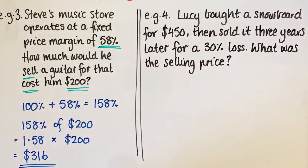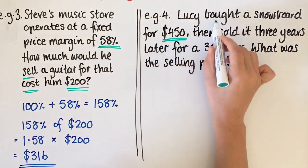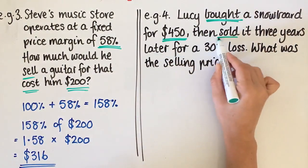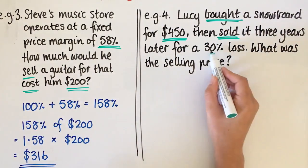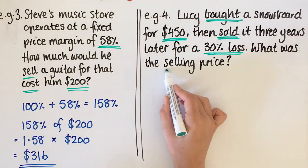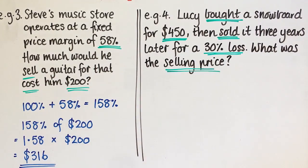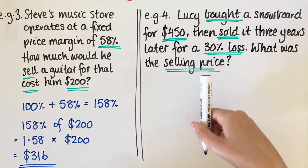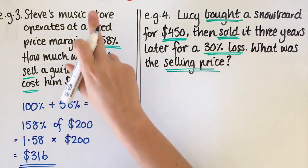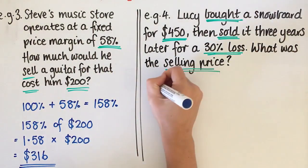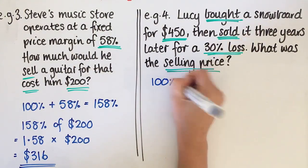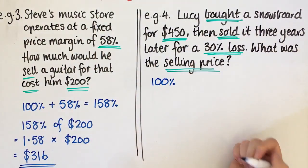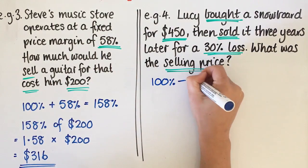Right, this time we've got Lucy. Lucy bought a snowboard for $450, and then she sold it three years later for a 30% loss. What was the selling price? So same with this one, we need to work out what the percentage change is. So if it's a loss, that means we're going down. Steve was going up, Lucy's is going down. So she started with 100%, which was $450, but she's made a 30% loss.